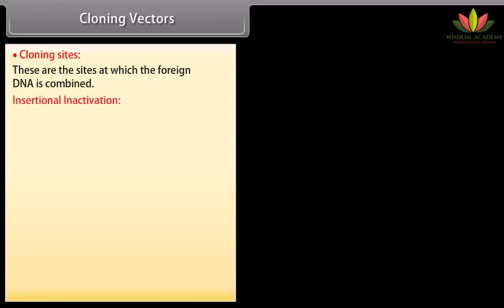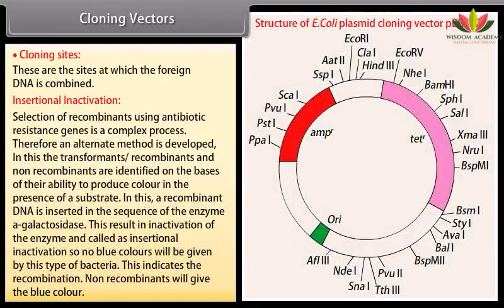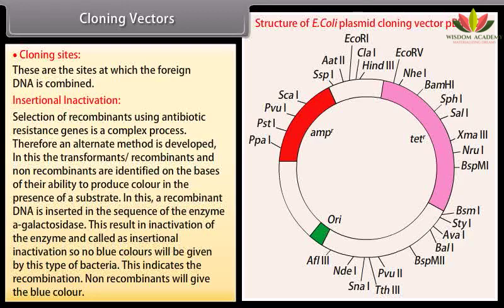Insertional inactivation. Selection of recombinants using antibiotic resistance genes is a complex process. Therefore, an alternate method is developed. In this, the transformants, recombinants, and non-recombinants are identified on the basis of their ability to produce color in the presence of a substrate. A recombinant DNA is inserted in the sequence of the enzyme beta-galactosidase. This results in inactivation of the enzyme, called insertional inactivation, so no blue color will be given by this type of bacteria — indicating recombination. Non-recombinants will give the blue color.